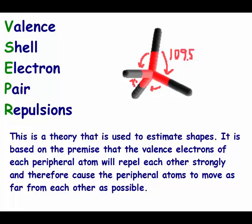We're going to be talking about VSEPR, which stands for valence shell electron pair repulsions. It's a theory used to estimate molecular shapes. It is based on the premise that the valence electrons of each peripheral atom — atoms attached to the central atom — will repel each other strongly, causing the peripheral atoms to move as far away from each other as possible, giving them different bond angles.